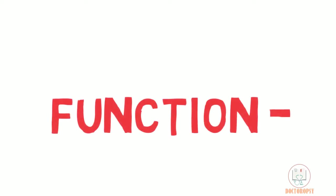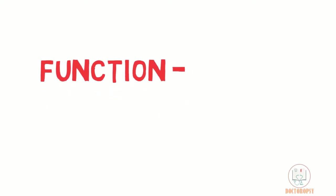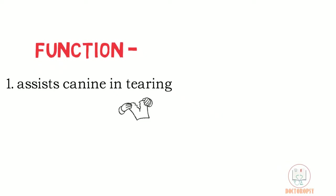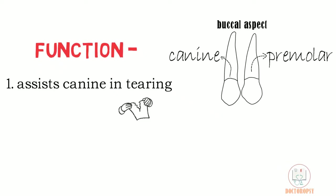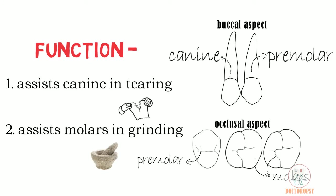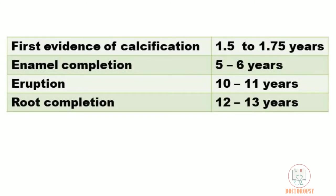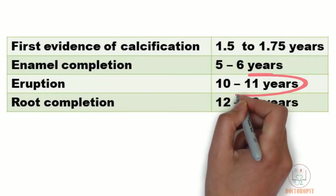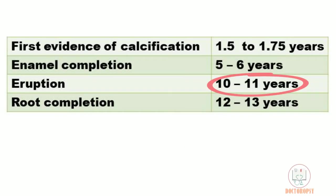The maxillary first premolar has a dual function. It assists the canine in tearing with its sharp buccal cusp, and also assists molars in grinding by its occlusal surface. The age of eruption of the maxillary first premolar is 10 to 11 years.